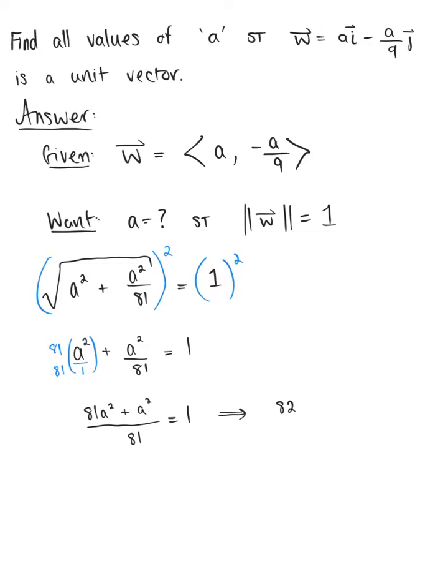Or simply 82 divided by 81 times a squared is equal to 1. So then to isolate that a squared, we multiply both sides by the reciprocal.